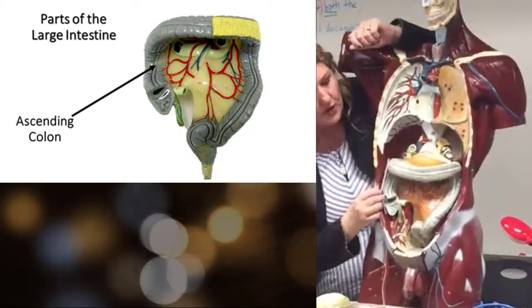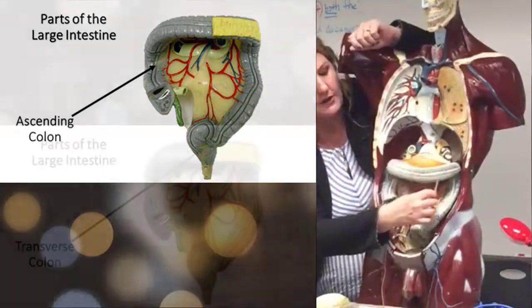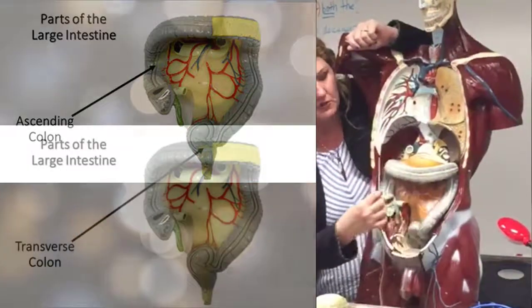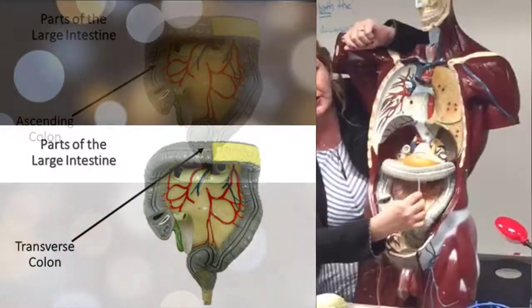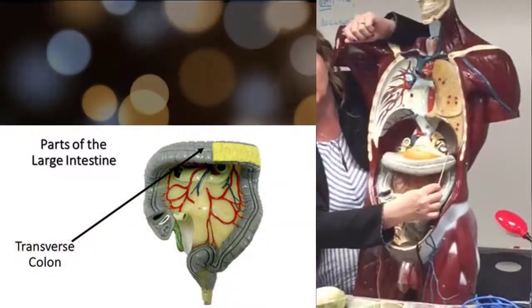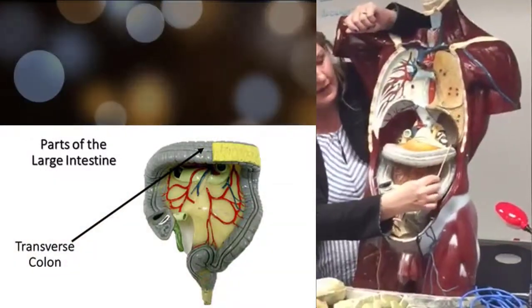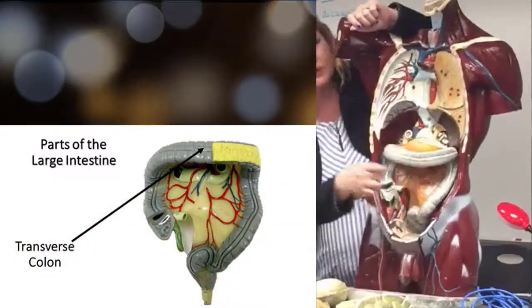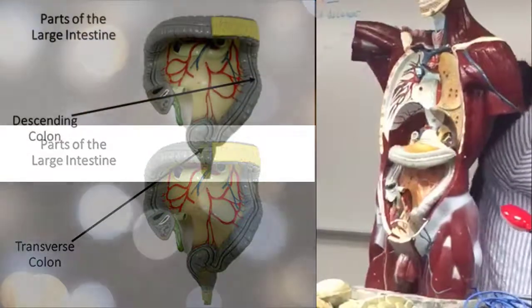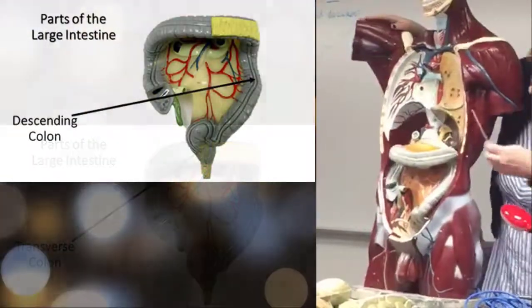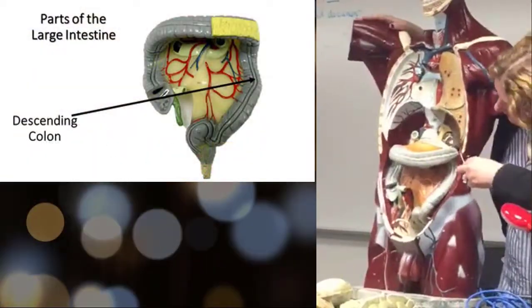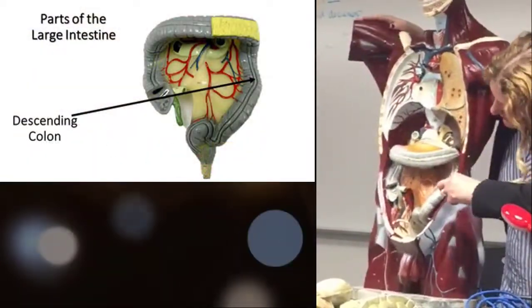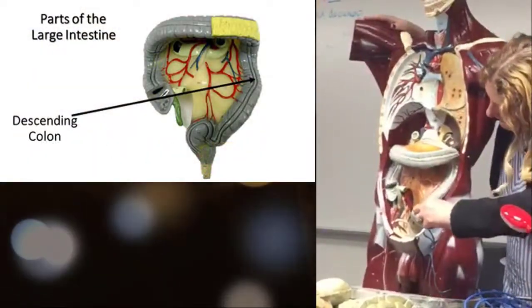The appendix — they used to call it a vestigial organ because we believed it had enzymes that allowed us to digest cellulose, but now we believe it has more of an immune function. From the cecum, the food is going to travel upward — that's why we call this the ascending colon. From here it travels across, which is why we call it the transverse colon, and then it travels down — the descending colon.